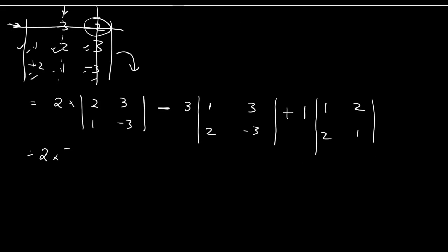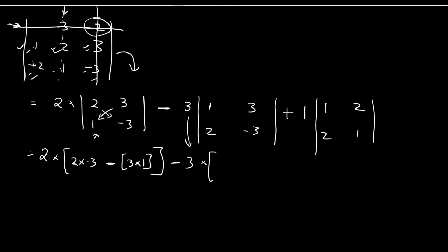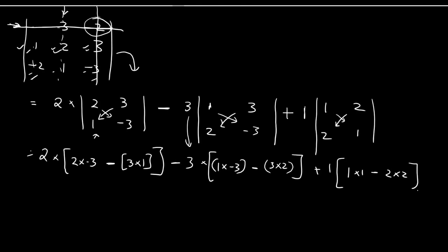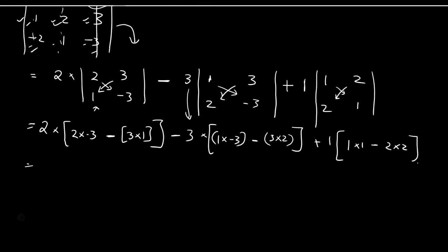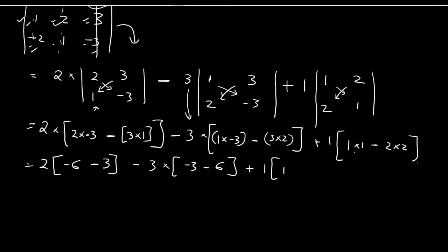Now we solve each second order determinant. For the first: 2 times (2·(−3) − 3·1) = 2·(−6 − 3) = 2·(−9). For the second: −3 times (1·(−3) − 3·(−2)) = −3·(−3 + 6) = −3·3. For the third: +2 times (1·1 − 2·(−2)) = 2·(1 + 4) — wait, we get 1·1 − 2·2 giving 1 − 4.